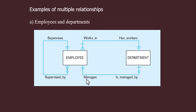Examples of multiple relationships — there are two entities and there can be many possibilities of relationships between them: employee and department. The first possibility is that within a department there are workers. Inside one department there can be many employees, and at least there should be one employee. It is not possible that there is a department with no workers. So this is one-to-many: mandatory many.